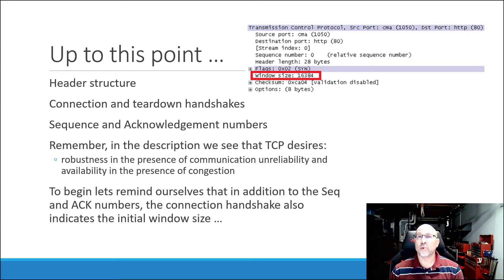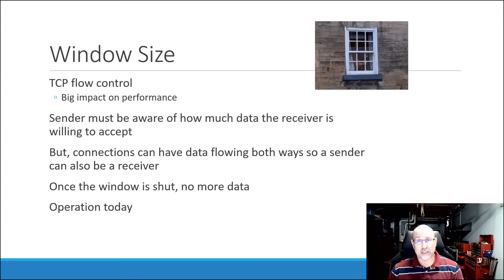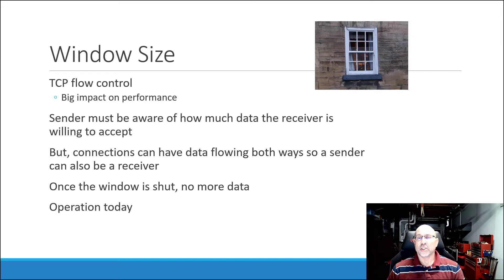So in addition to the sequence and acknowledgement numbers at the beginning of the conversation, we also have this initial window size. I'll emphasize the initial part of that because the window can change, but both sides communicate their initial window size to the opposite end. Window size is an important detail because not only does it restrict the amount of data that can flow, but it also can have a big impact on performance. So the sender of the data has to be aware of how much data the receiver is willing to accept or can accept.